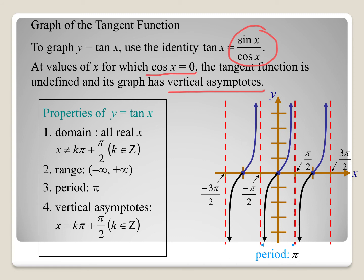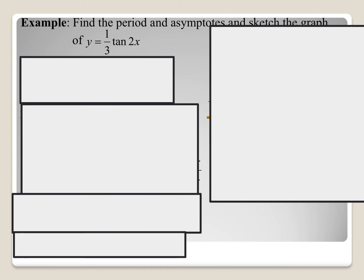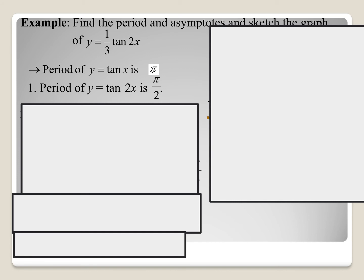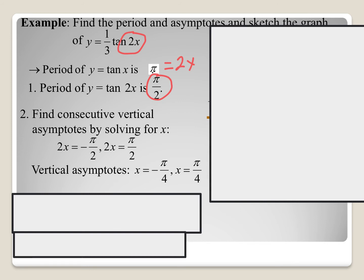Let's graph y equals 1 third tangent of 2x. First, identify the period. The normal period is pi. We take the expression 2x and set it equal to pi, solving for x to get the new period of pi over 2. We can also use pi divided by b to get pi over 2. That means the distance between our asymptotes is pi over 2. Next, find our asymptotes by taking 2x and setting it equal to negative pi over 2 and positive pi over 2. Solving gives new asymptotes at negative pi over 4 and positive pi over 4.